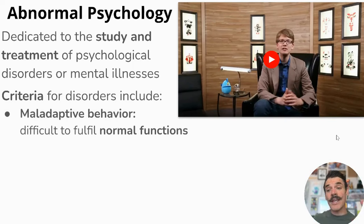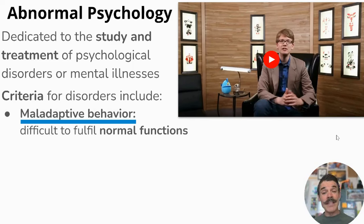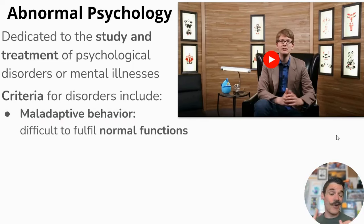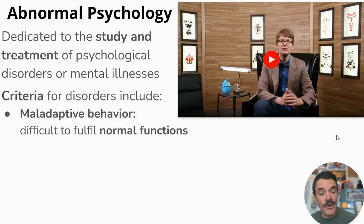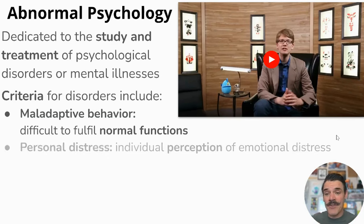The first criterion is maladaptive behavior — difficulty fulfilling normal function. This can be just like going to school or going to work. Not being able to do what you want to do is maladaptive behavior.